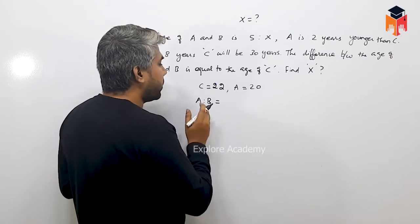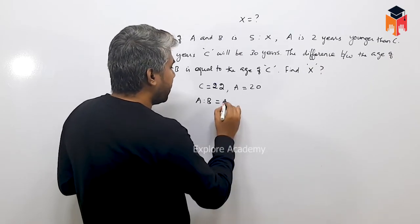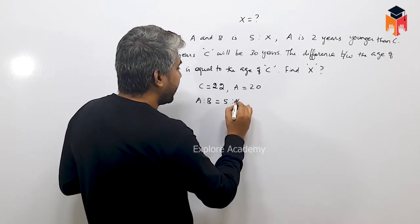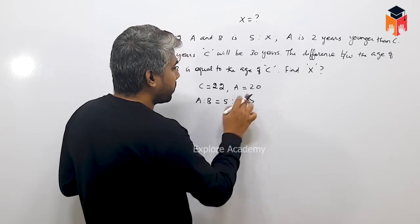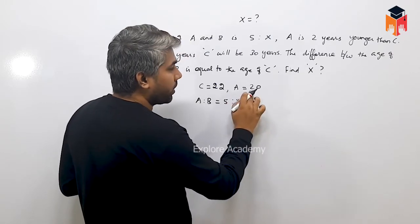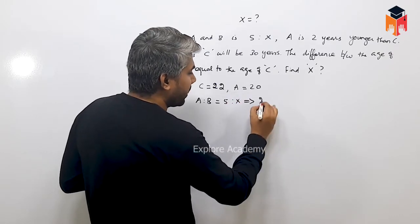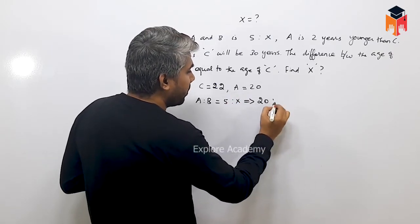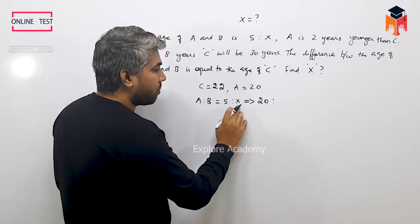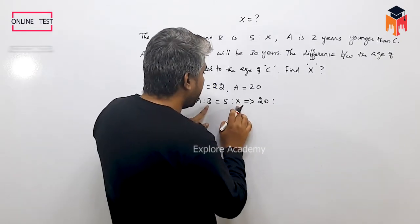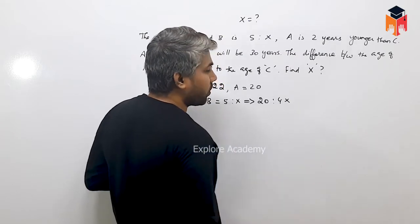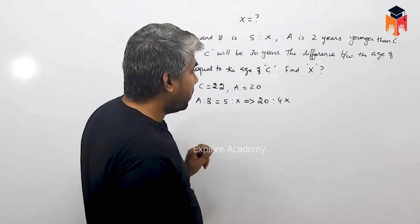A and B are in ratio 5 to x. A's age is 20. Now 5 is how many times 20? 5 times 4 is 20, so we multiply by 4. Then B equals 4x, meaning x equals 4 times. Let's work with this ratio.